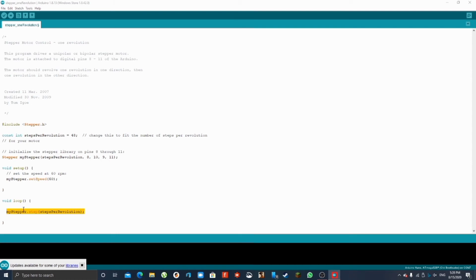This will rotate the motor clockwise one revolution at the start of the loop at 60 RPM speed. The code is now complete. Now verify, compile and upload the code to the Arduino.